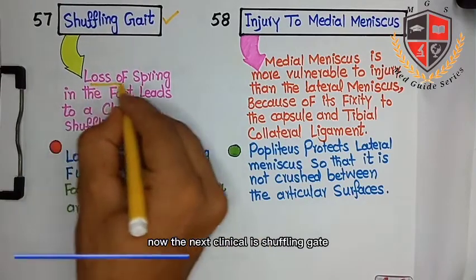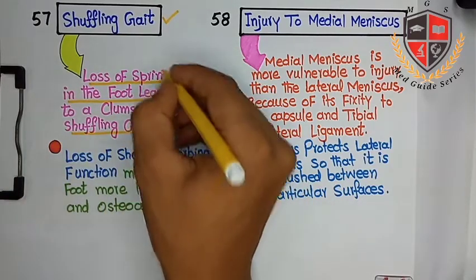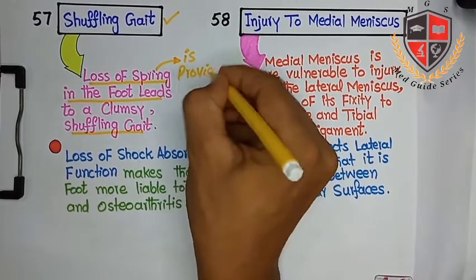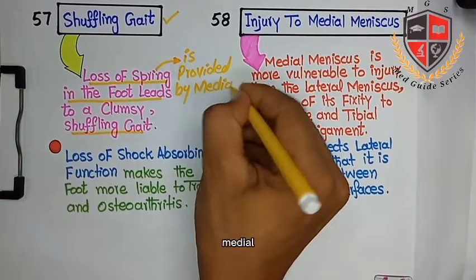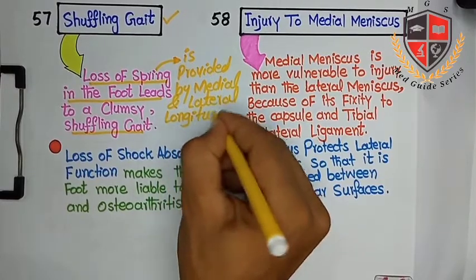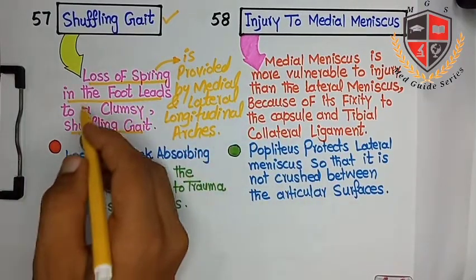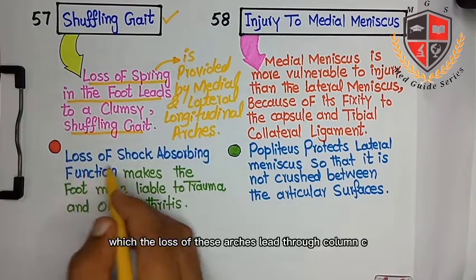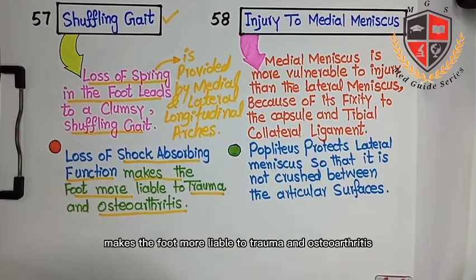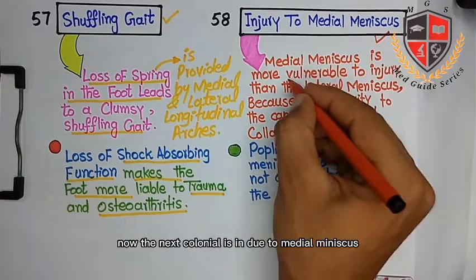The next clinical is shuffling gait. Loss of the spring in the foot leads to a clumsy shuffling gait. The spring in the foot is provided by the medial and lateral longitudinal arches of the foot. Loss of these arches leads to a clumsy shuffling gait; loss of shock-absorbing function makes the foot more liable to trauma and osteoarthritis.